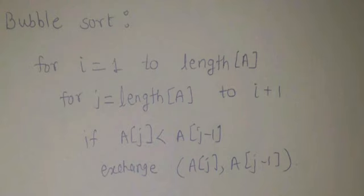In bubble sort, we start our i variable from 1 to the length of the array, that is the number of elements. Up to that we vary the value of i. For j, it is the reverse loop — if i is starting from 1, j is starting from the end of the array. For example, if there are 5 elements, i will vary from 1 to 5 and j will vary from 5 to 2, because j goes from length of array down to i plus 1.